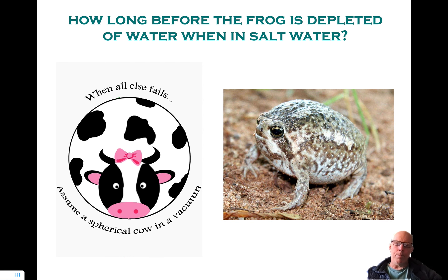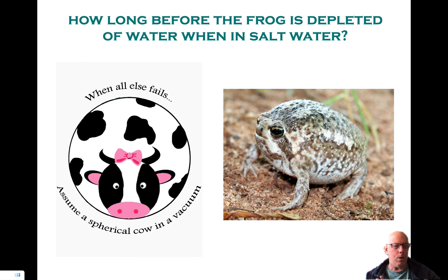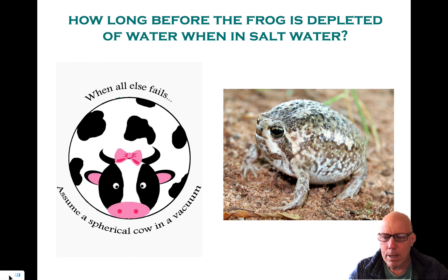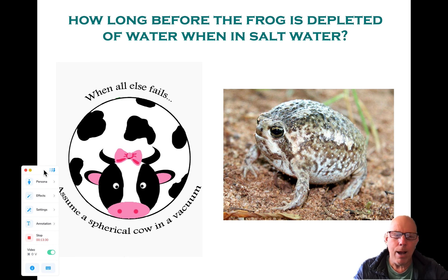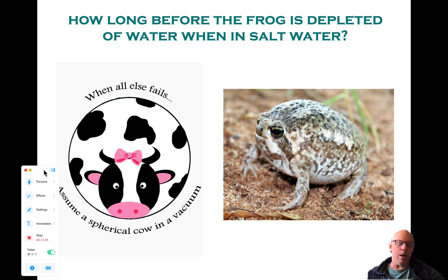So where are we? I'm done with this vignette. This was an introduction to the physics. Now what we have to do in the coming vignettes is actually implement the physics — write the equations and work out the details. Let's keep our eye on the prize. What is the prize? We want to figure out the rate at which water is lost from a frog if we put it in saltwater.